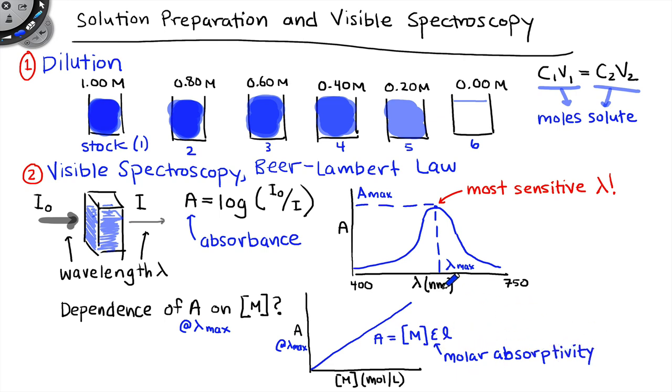Molar absorptivity is largest at lambda max, and I'll let you think through that, but the idea is if absorbance is at a maximum at that point, then epsilon must also be at a maximum at that wavelength point.